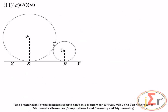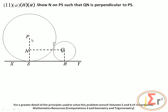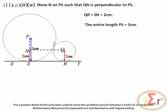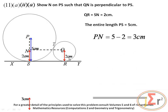We mark point N on PS such that QN is perpendicular to PS. Since QR equals SN equals 2 centimeters, and the entire length PS equals 5 centimeters, we have PN equals 5 minus 2, which equals 3 centimeters.